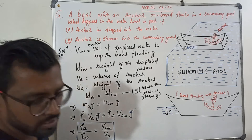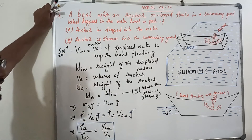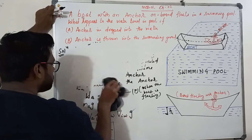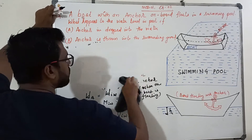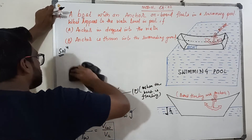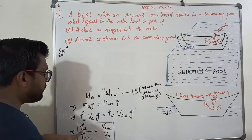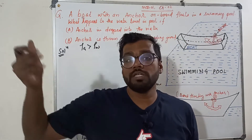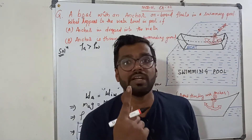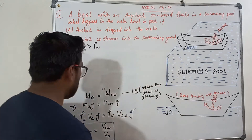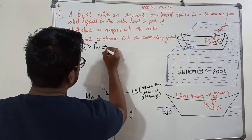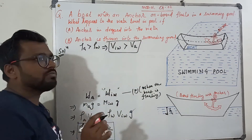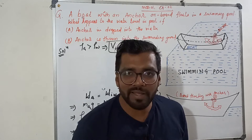I hope you have noted this equation. Now, we know the density of the anchor is more than the density of water — the anchor is made of steel, with specific gravity 7.85, while water's specific gravity is 1. Since density_anchor > density_water, this implies the volume of displaced water must be greater than the volume of the anchor.